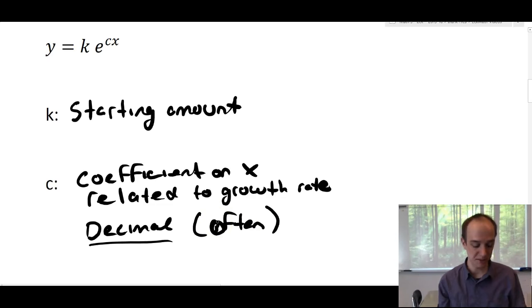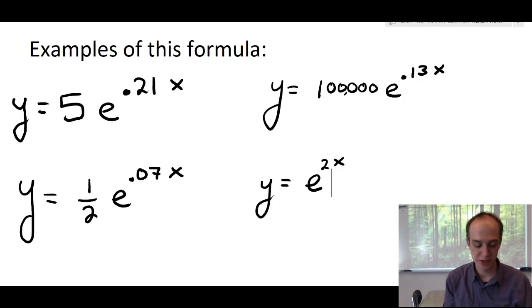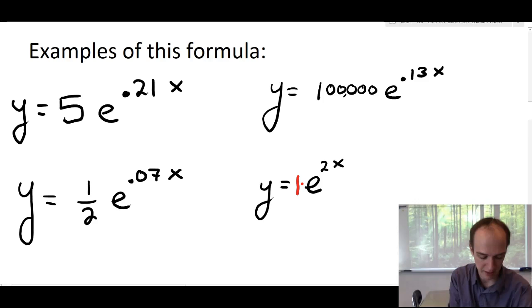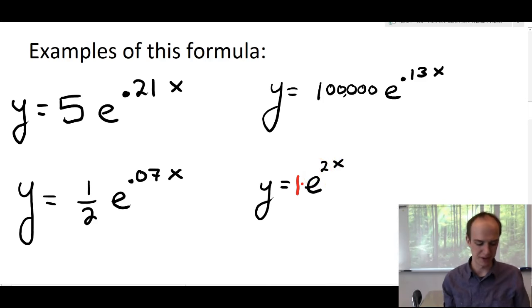So let's look at some examples of just equations that use that E continuous growth. So here's just four quick examples of possible exponential growth situations. Notice that the a value can be a small number like five, or the starting value can be small number like five, it can be a fraction, it can be a big number, or it could be like in this last case, just an invisible one. And the K value can be a decimal like these guys, or it can be a whole number like you see in this scenario. So these are all examples of equations that might use E.